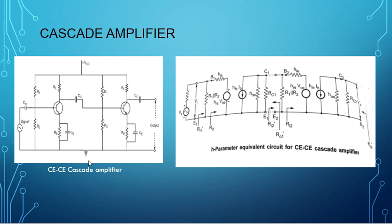This figure shows the two-stage RC-coupled CE-CE cascade amplifier. Here both stages are common emitter amplifiers. The output of the first stage is coupled to the input of the next stage through the coupling capacitor, and there is a resistive load at the output terminal of the first stage. The coupling capacitor CC blocks the DC voltage of the first stage from reaching the base of the second stage. The RC network is broadband in nature, giving a wide-band frequency response without a peak at any frequency, and hence is used to cover the complete audio frequency amplifier band.